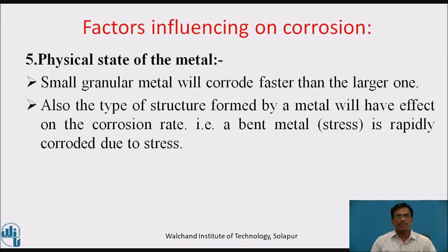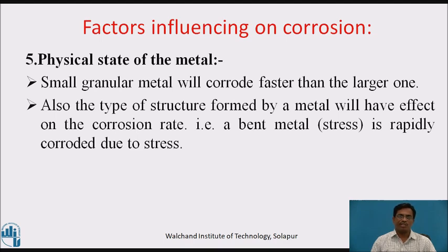Fifth, physical state of the metal — small granular metal will corrode faster than a larger one. Also, the type of structure formed by a metal will have an effect on corrosion rate; that is, a bent metal is rapidly corroded due to the stress.